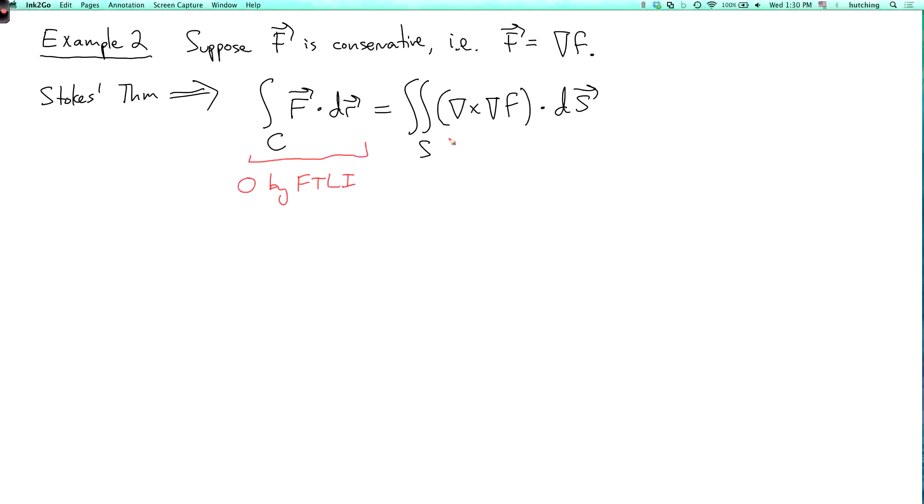And what about this term over here? Well, we know that the curl of a gradient is zero. Informally, if you think of del as a vector of differential operators, then it crosses itself as zero, because any vector crosses itself as zero. So we know that this is zero, and the integral of zero is zero. So, in this case, what Stokes' theorem is telling us is that zero equals zero. So it works.